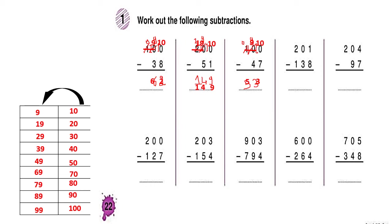The fourth one: 201 minus 138. We borrow 1 from the 2 — it becomes 1 — and put it beside the 1 to make 11. 11 minus 8 is 3, then 9 minus 3 is 6, and 1 minus 1 is 0. So the final answer is 63.